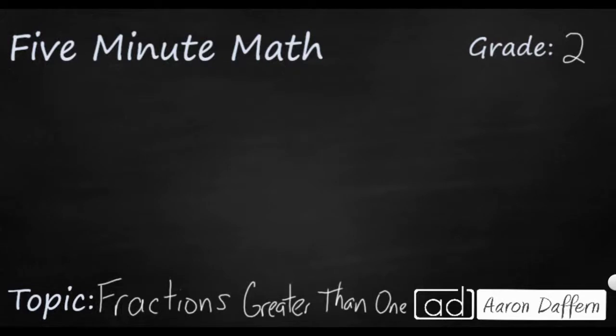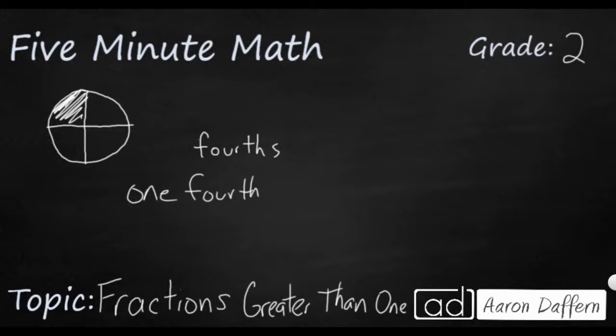So we'll start with your basic fraction. Let's cut the circle here. Let's cut it into four equal pieces. So what we have is we've got fourths. And the reason we're calling this fourths is because this one whole is broken up into four equal pieces. So if I were to shade in one piece, I would say we've got one-fourth. I would drop the S at the end of fourth. I would just say one-fourth.